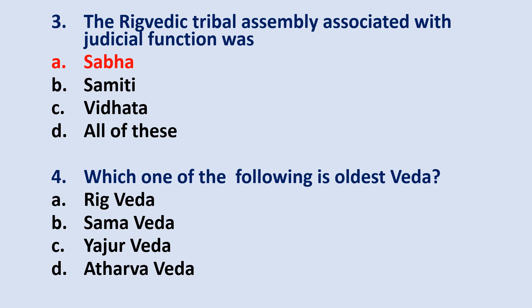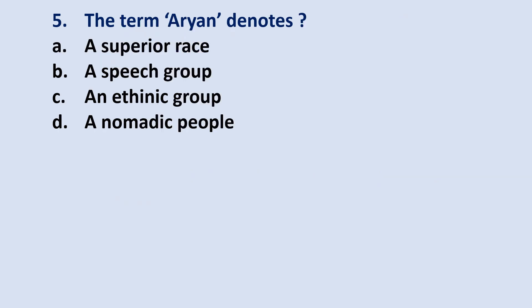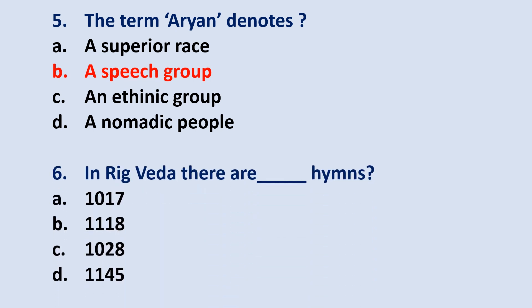Third question: the Vedic tribal assembly associated with judicial function was? The correct answer is option A — Sabha. Fourth question: which one of the following is the oldest Veda? The correct answer is option A — Rig Veda. Fifth question: the term Arya denotes? The correct answer is option B — a speech group. Sixth question: in Rig Veda, there are how many hymns? The correct answer will be option C — 1028.